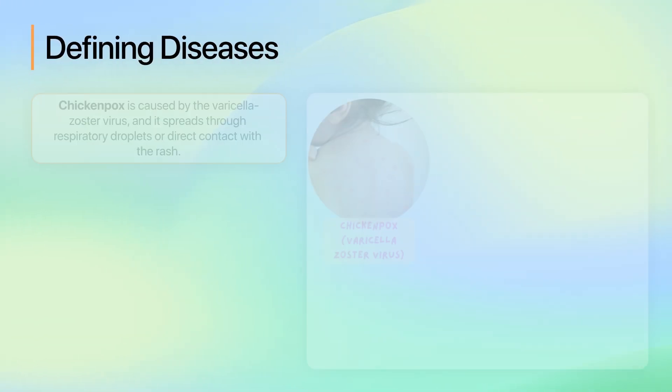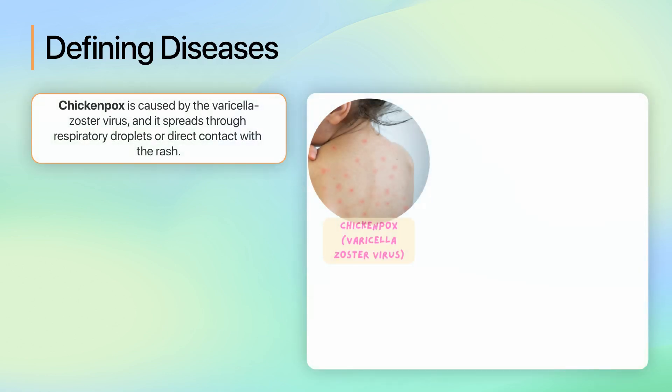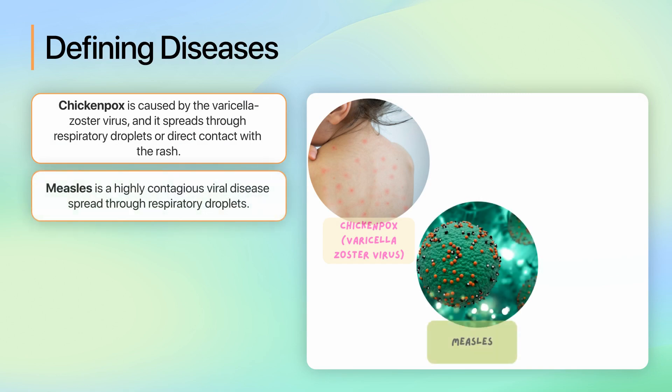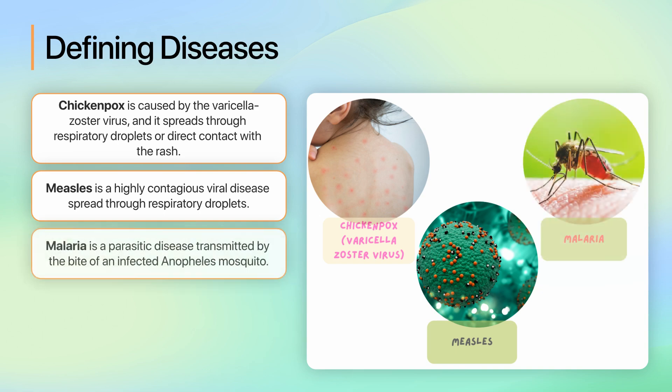Here are some examples of communicable diseases. Chickenpox, caused by the varicella zoster virus, spreads through respiratory droplets or direct contact with the rash. Measles is a highly contagious viral disease spread through respiratory droplets. Malaria is a parasitic disease transmitted by the bite of an infected Anopheles mosquito.